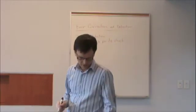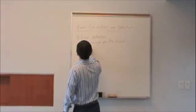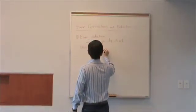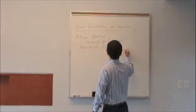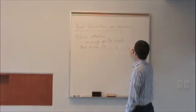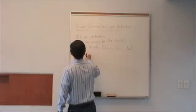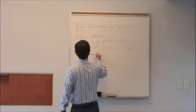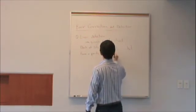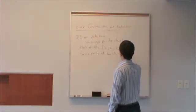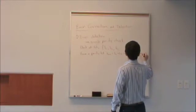The simplest example we have of error detection is the single parity check. In the single parity check, we have a block of bits — B1, B2, B3, up to BK — and what we do is form a parity bit. I'm going to call it B_{K+1}, which equals B1 plus B2 plus B3 plus ... plus BK, mod 2.